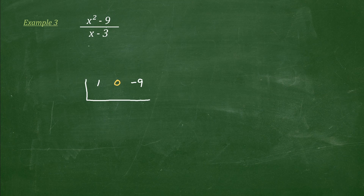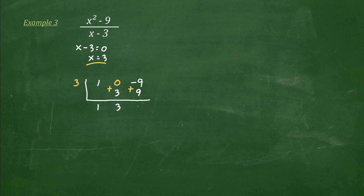Next, let's look at our divisor. We have x minus 3 equal to 0. Therefore, x is equal to 3 — so this is our test zero. Now, you can do this formally or simply get the opposite sign of negative 3, which is 3. That's a shortcut. So we write that test value 3 here. Next, we bring down 1. Then, multiply: 1 times 3 is 3. And then add: 0 plus 3 is 3. Then multiply again: 3 times 3, which is 9. And then finally, add: negative 9 plus 9, which is 0.